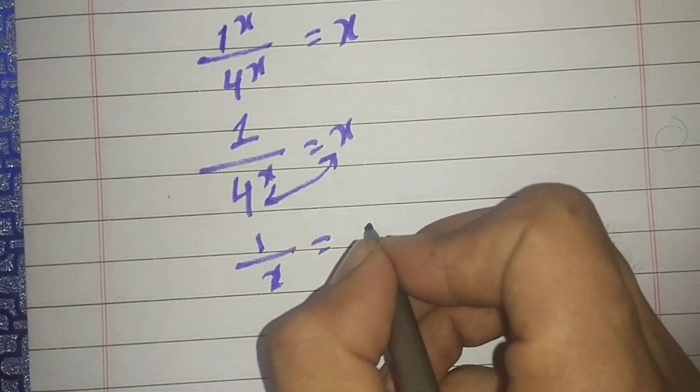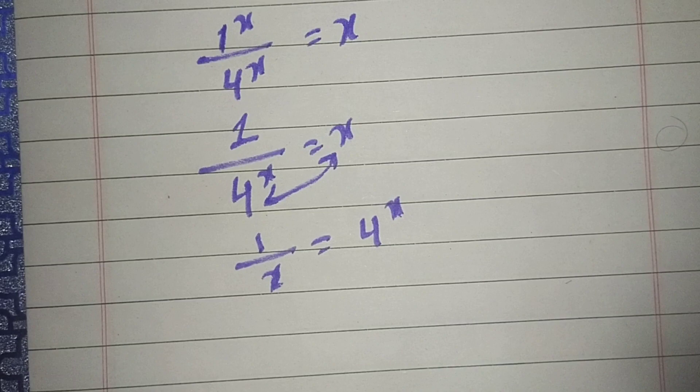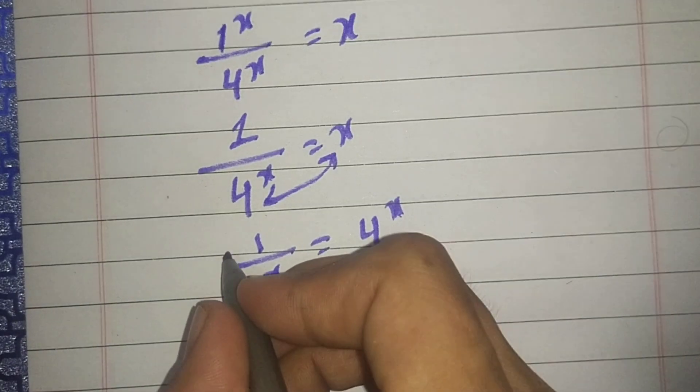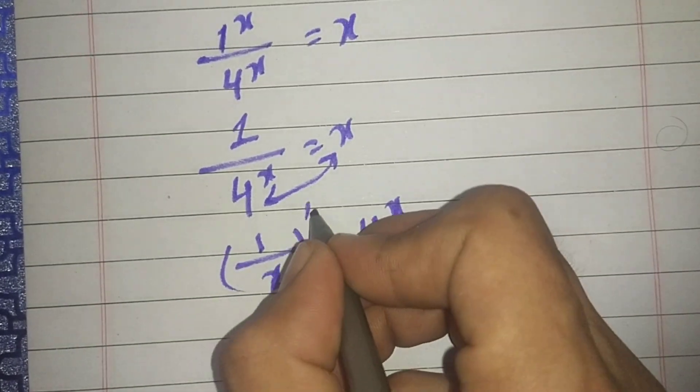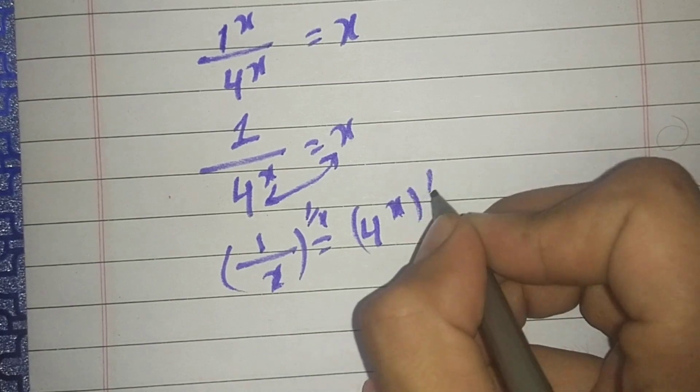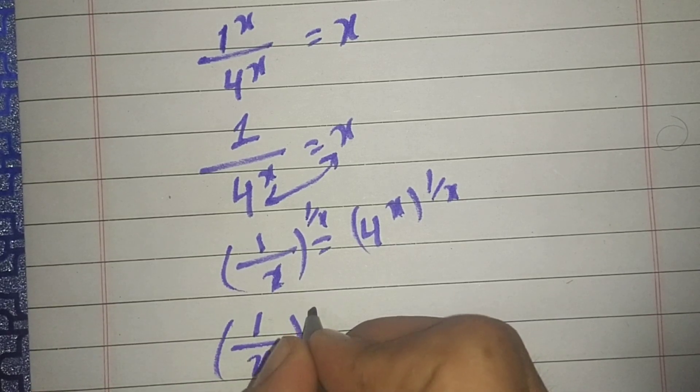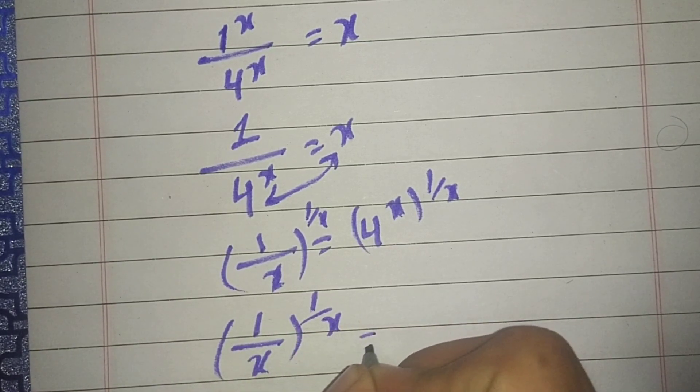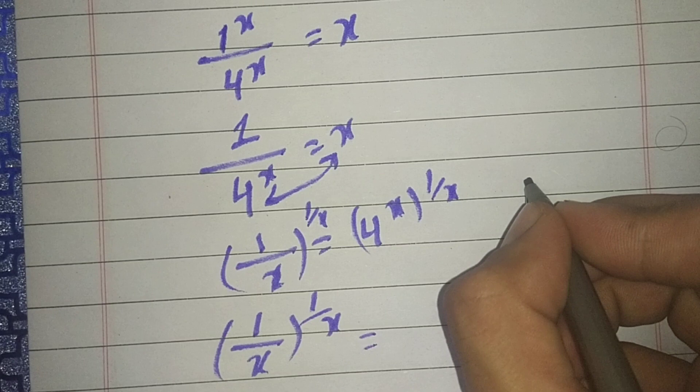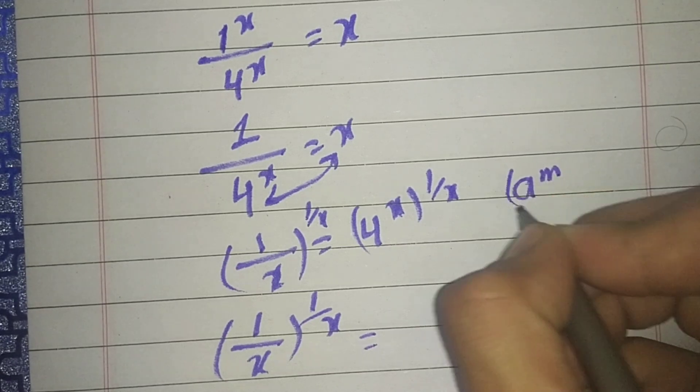We interchange these terms so we get 1/x equals 4^x. We raise both sides to the power of 1/x, and we get (1/x)^(1/x) equals...